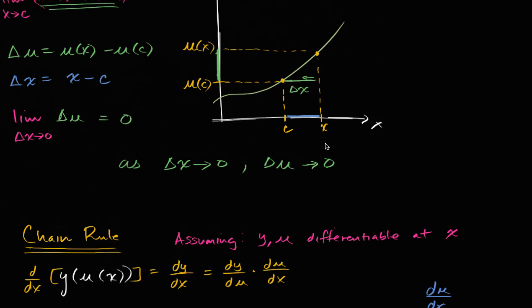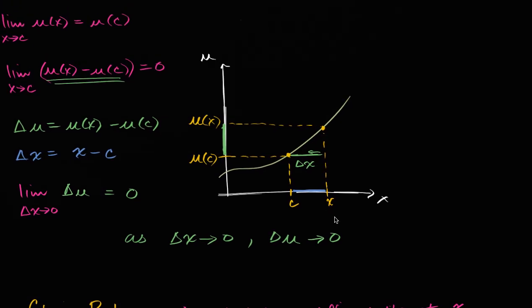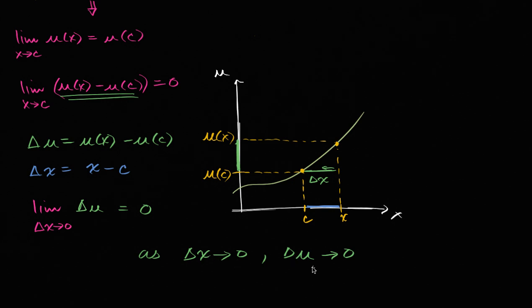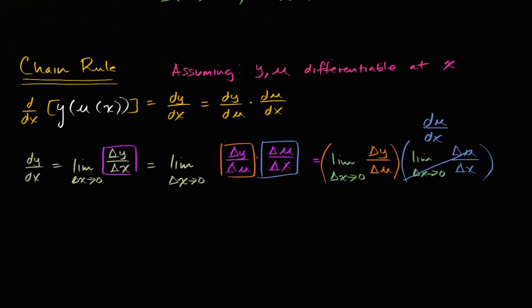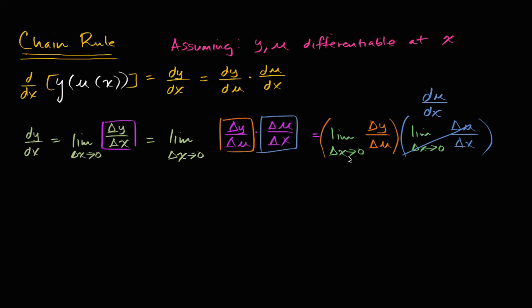But we just have to remind ourselves — from probably the previous video — which is: if we have a function u that is continuous at a point, then as delta x approaches zero, delta u approaches zero. So we can actually rewrite this. Instead of saying delta x approaches zero, because u is differentiable at x — which means it's continuous at x — delta u is going to approach zero as our change in x gets smaller and smaller. So we can rewrite this as our change in u approaches zero, and when we do that, this is just dy/du, the derivative of y with respect to u.